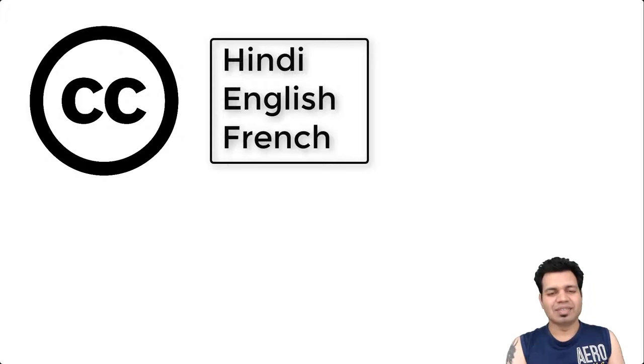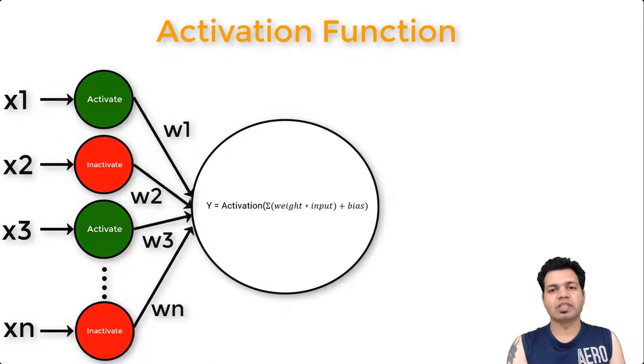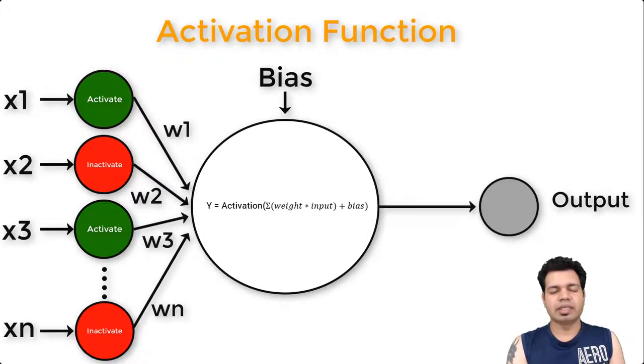In artificial neural networks, activation functions help in deciding whether a neuron should be activated or not by using the weighted sum with an added bias. Their main purpose is to convert an input signal of a node in an artificial neural network to an output signal, determining the output of the neural network like yes or no responses.